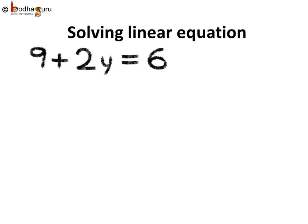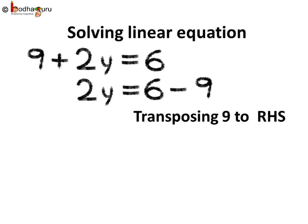Now let us try to solve a linear equation: 9 plus 2y equal to 6. We need to find the value of y. The first step is to transpose 9, which is on the left side, to the right hand side, because we want only the variable on the left hand side. On moving 9 to the RHS it becomes minus 9, so we get 2y equal to 6 minus 9.